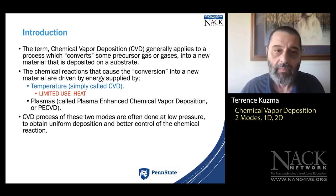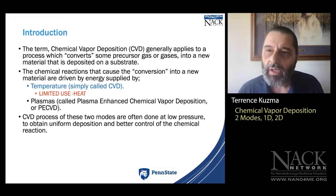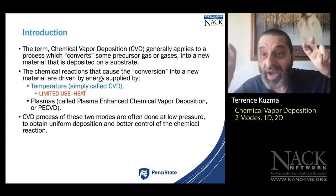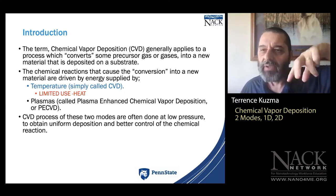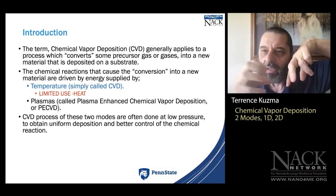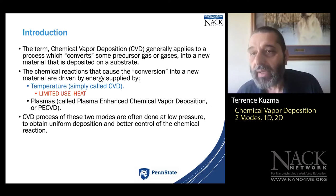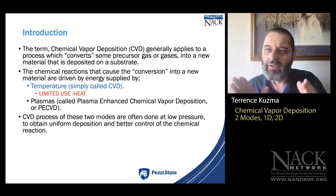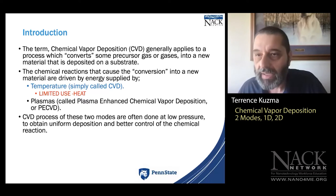CVD generally applies to a process that converts precursor gases into material deposited onto a substrate. We could also extend this to liquid-phase deposition — for example, growing nanowires in a liquid solution given a catalyst. But for this discussion, we're focusing on vacuum equipment, which is how most 2D CVD is done.